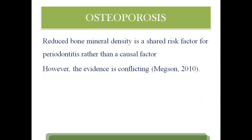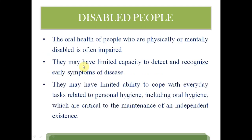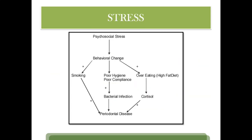Osteoporosis is also a risk factor for periodontitis. Disabled people have limited capacity to perform proper oral hygiene measures, which contributes to periodontal diseases. Stress causes behavioral changes — overeating, smoking, poor hygiene, poor compliance, and bacterial infection through elevated cortisol — all lead to periodontitis. This is like a web of causation, so stress can cause periodontal disease.